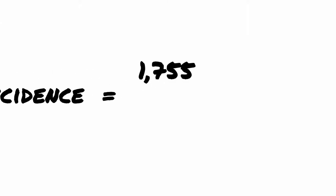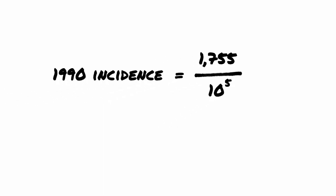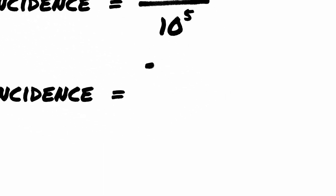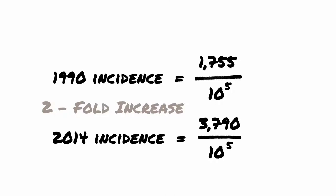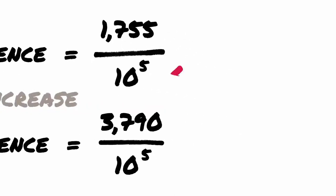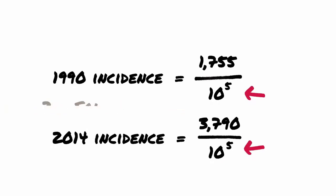When we compare the incidence of 1,755 per 100,000 in 1990 with 3,790 per 100,000 in 2014, we can see that the incidence of myopia has more than doubled in 24 years. Because we have used the same denominator — 100,000 — for the incidence in both years, we can compare them easily without making any changes. This increase in incidence is not surprising from our knowledge of the risk factors for the disease and the country.